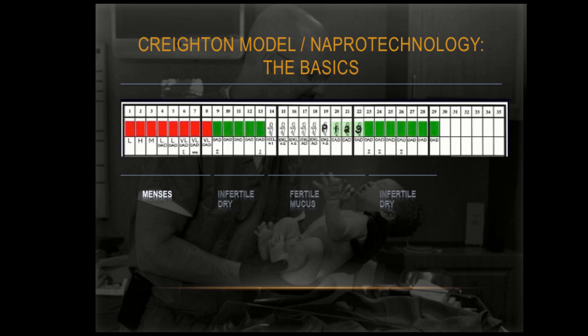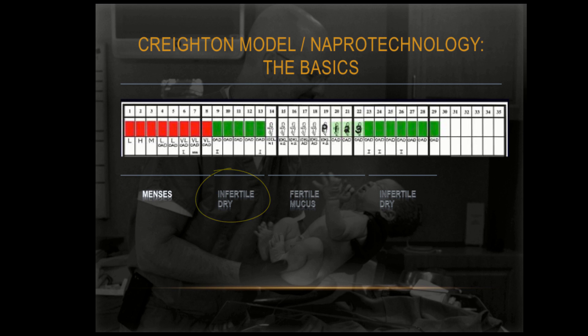We can see that the menstrual cycle begins with a menstrual period, obviously, followed by an infertile period of dry days, followed by fertile mucus days, followed again by infertile days. This is the basic fundamental pattern of the menstrual cycle.